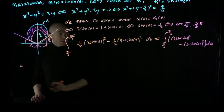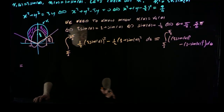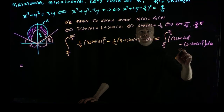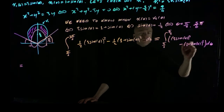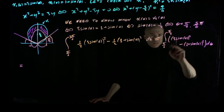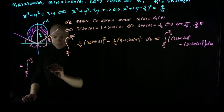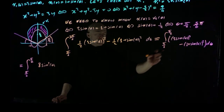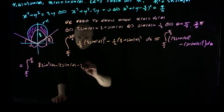Let's expand and simplify. We have sine squareds to deal with. Expanding (1 + sin θ)² gives 1 + 2 sin θ + sin²θ, which cancels one of the 9 sin²θ terms. The integral from π/6 to π/2 simplifies to 8 sin²θ − 2 sin θ − 1 dθ.